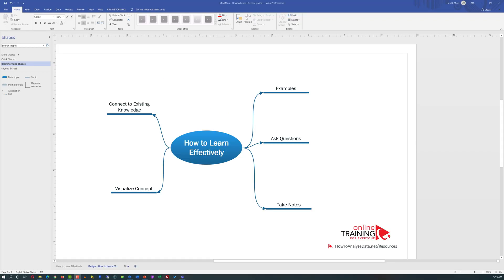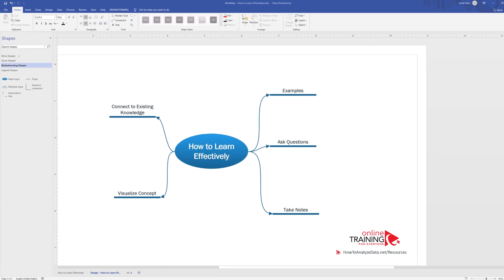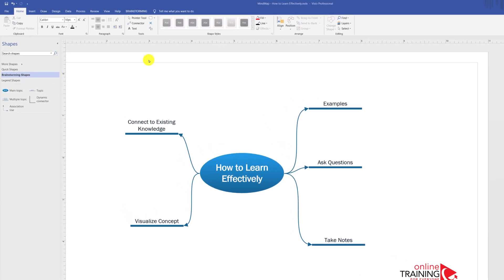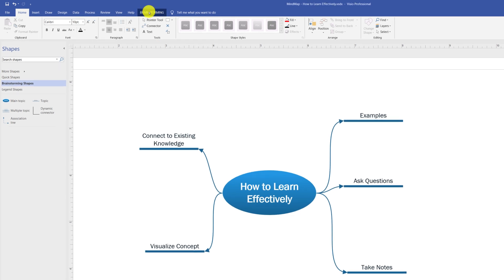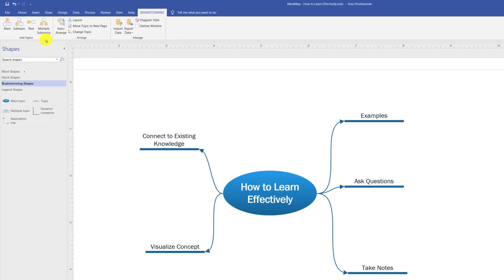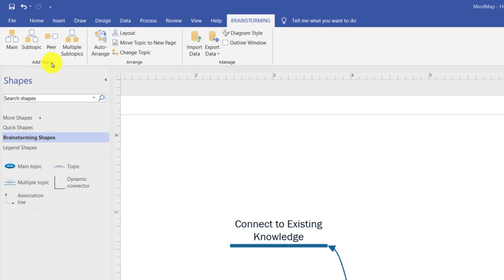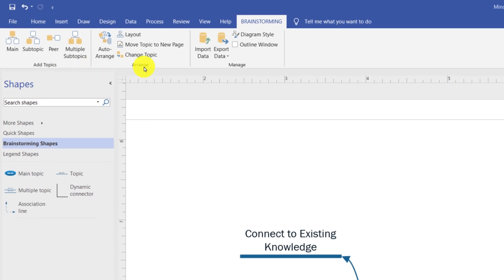There are a couple cool options available to change the design of the diagram without changing the functionality. Because we're using the brainstorming template, Microsoft Visio added the brainstorming tab and there are multiple options in this tab. In addition to adding topics or rearranging items on the screen automatically, you have an option of changing the diagram style.